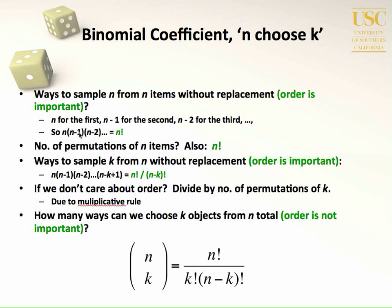So we multiply n times n minus one times n minus two to get n factorial total ways to sample n items from n items where we care about the ordering. We then divide by k factorial times n minus k factorial, because we don't care about how k is ordered — k has no meaningful order — so we adjust for that by dividing. That gives us the expression n choose k.